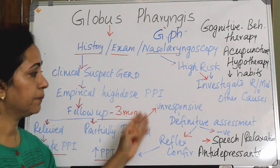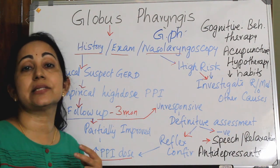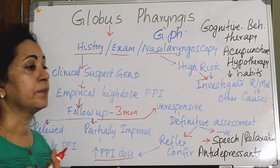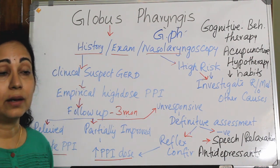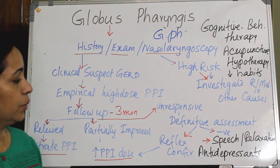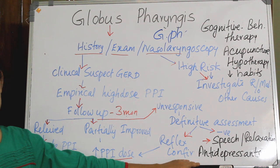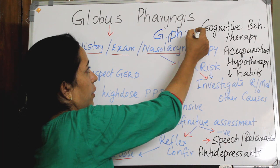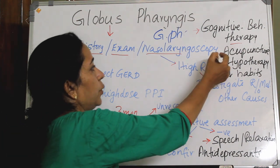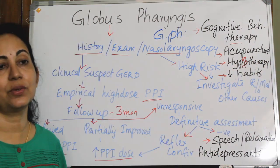Other treatment modalities include speech therapy, relaxation techniques, and tricyclic antidepressants. Since Globus is multifactorial — with contributions from GERD below and stress, anxiety disorders, and habitual problems above — cognitive behavioral therapy is also an option. Experimental therapies such as acupuncture and hypnotherapy are also available.